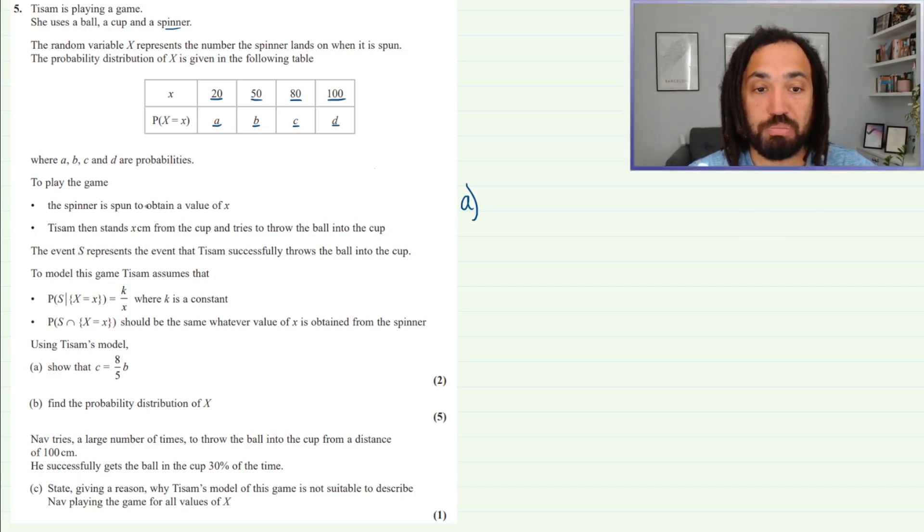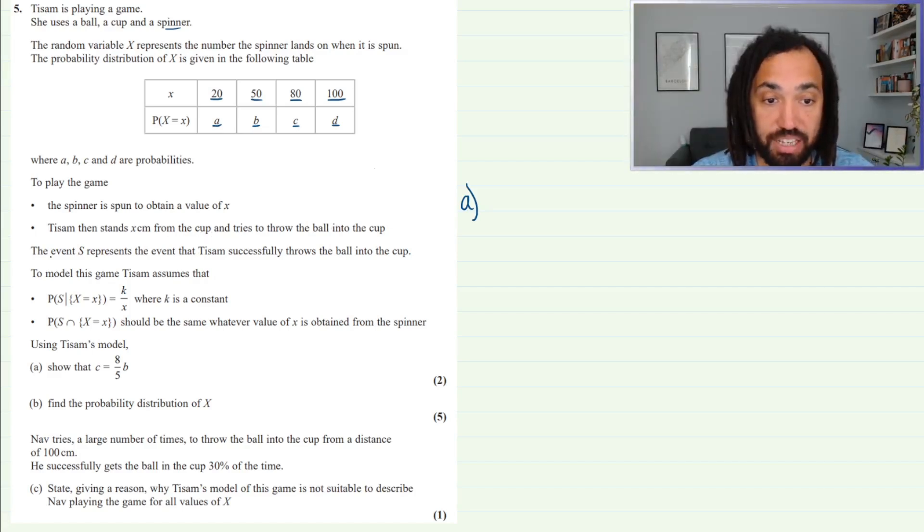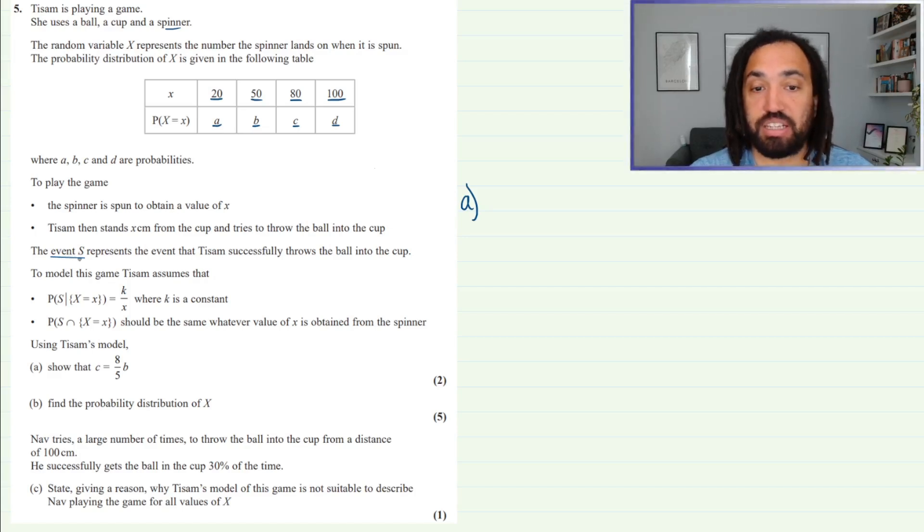To play the game, the spinner is spun to obtain a value of X. So you spin and get, for example, 80 on your first go. That means Tyson then stands 80 centimeters from the cup and tries to throw the ball into the cup. The event S represents the event that Tyson successfully throws the ball into the cup.